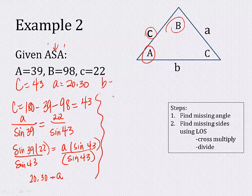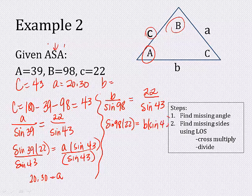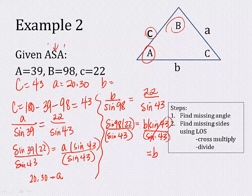The only missing part now is little b. Set up: little b over sine of big B, which is 98, equals little c over sine of 43. Cross multiply: sine of 98 times 22 equals B times sine of 43. Divide by sine of 43 — not just 43, but the sine of 43. Then b equals the result: sine of 98 times 22, divided by sine of 43, gives b equals 31.94.